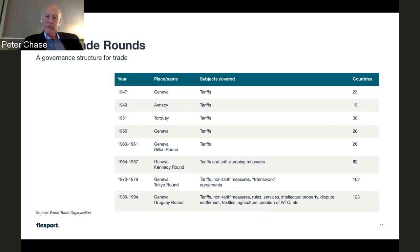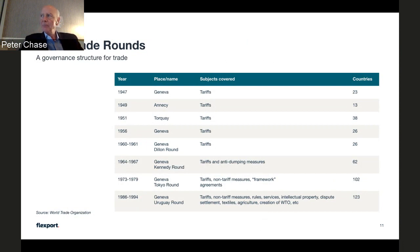The United States and Europe always saw themselves as the founders, the creators, and the guarantors of the global trading system, based on the General Agreement on Tariffs and Trade and subsequently the World Trade Organization. In all those rounds, there was always a sense that it was the U.S. versus the EU, and the trade differences between them would ultimately get resolved in the context of the Geneva talks. The last round of WTO negotiations, the Doha Round, was started directly after September 11th.